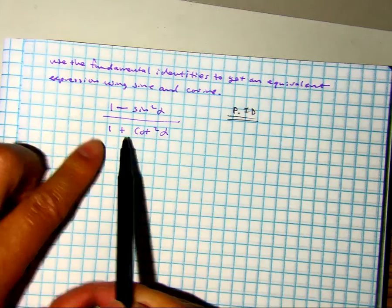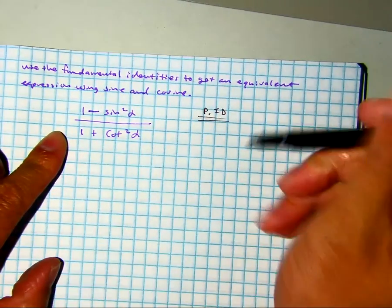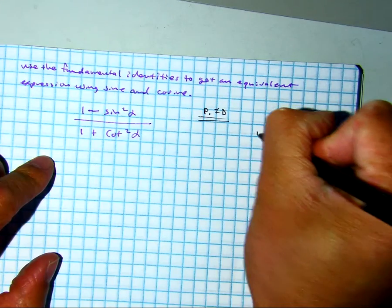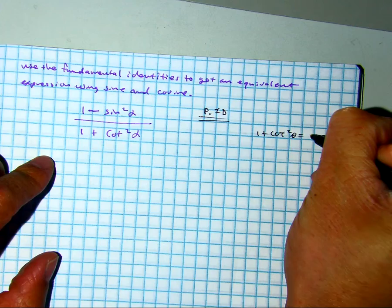Enoch, how about you tell me a Pythagorean identity that has this one? 1 plus cotangent squared beta equals cosecant squared beta.